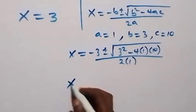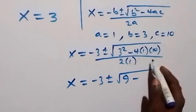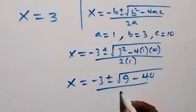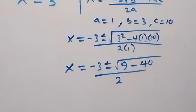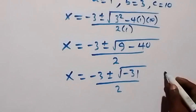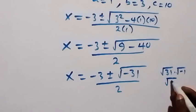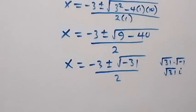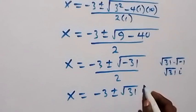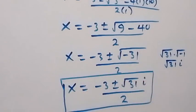The formula now becomes x equals to minus 3 plus or minus square root of 3 squared minus 4 times 1 times 10, over 2 times 1. We have x equals to minus 3 plus or minus square root of 9 minus 40, over 2. That gives us 9 minus 40 equals minus 31, so x equals to minus 3 plus or minus square root of minus 31, over 2. This can be written as root 31 times root minus 1, and root minus 1 is i, which is imaginary, so we have root 31·i. This is the same as x equals to minus 3 plus or minus root 31·i, over 2.